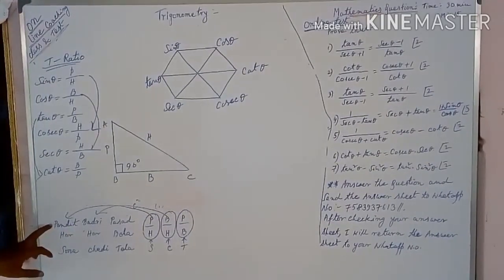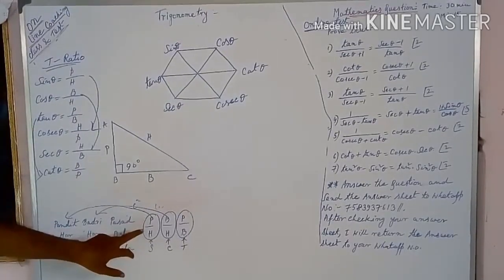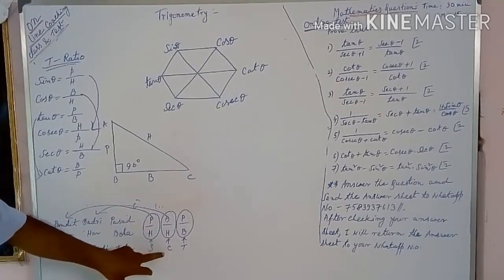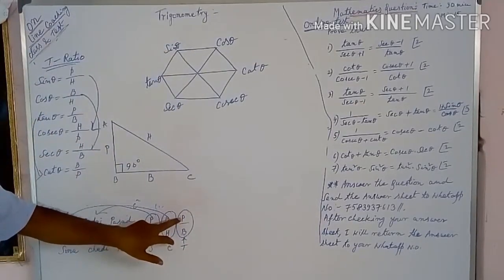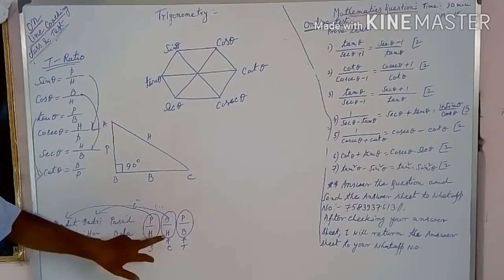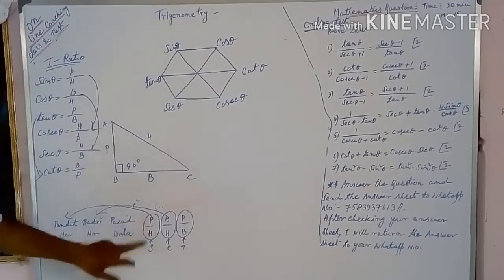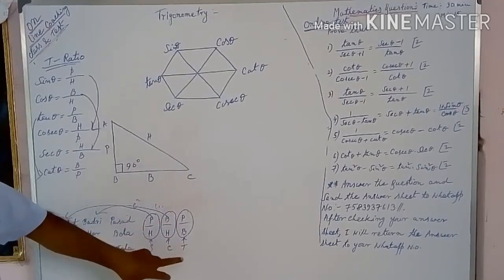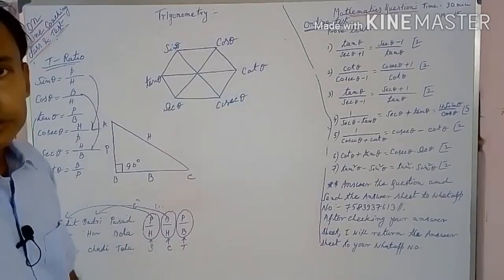To summarize: P by H is equal to sin theta, B by H is equal to cos theta, and P by B is equal to tan theta — where P means perpendicular, B is base, and H is hypotenuse. Perpendicular by hypotenuse is sin theta, base by hypotenuse is cos theta, and perpendicular by base is tan theta. This is applicable for a right angle triangle. So, let us look at the formulas for trigonometry.